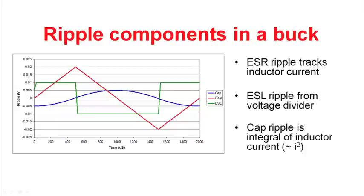And finally, the blue line shows the ripple component that's associated with the output capacitance of the capacitor itself. And it is the integral of the ripple current. And so it works out to be a squared function. And so it's kind of interesting when you look at where these ripple components line up.